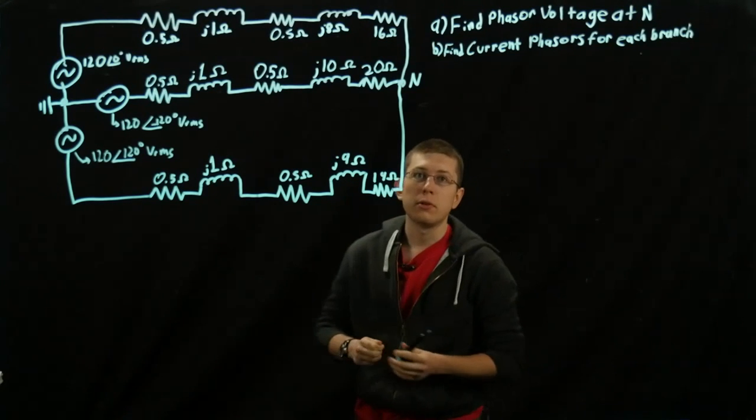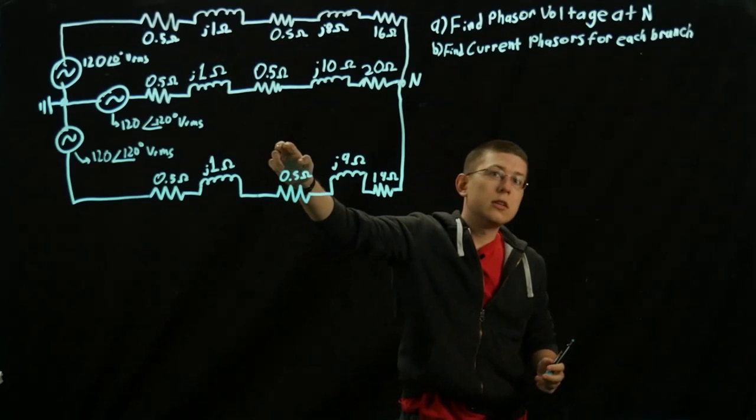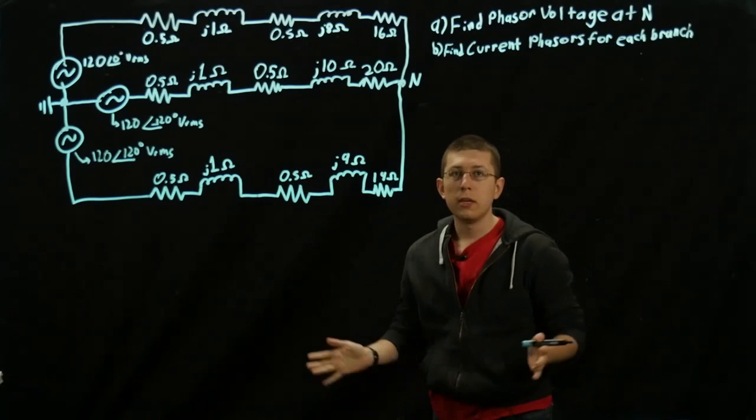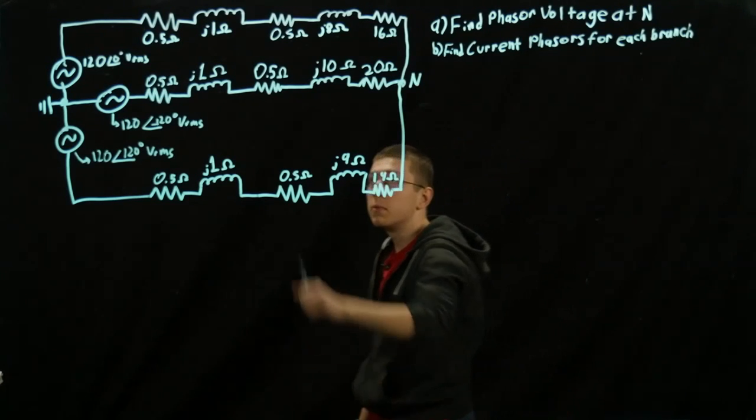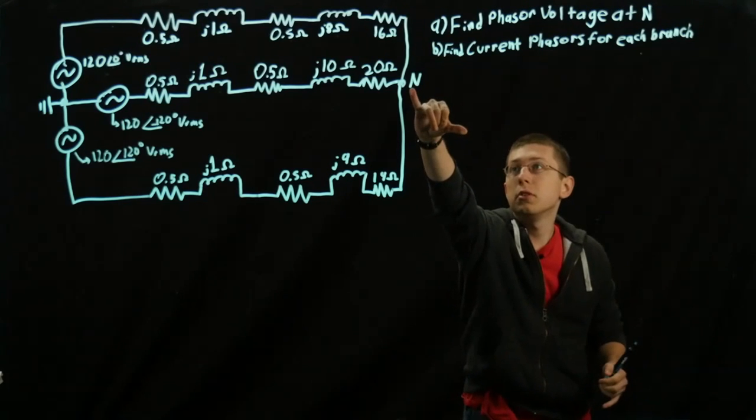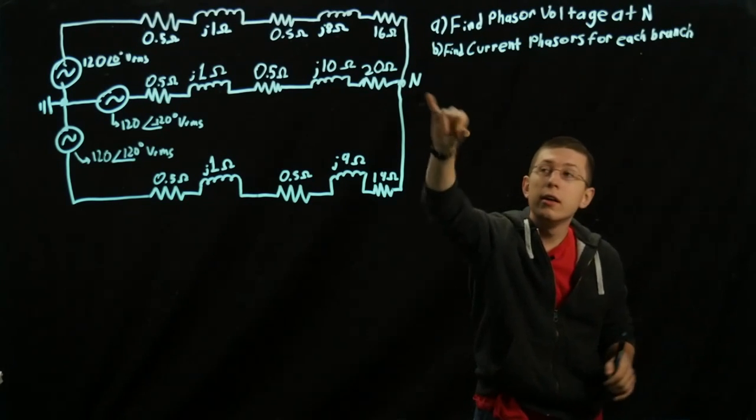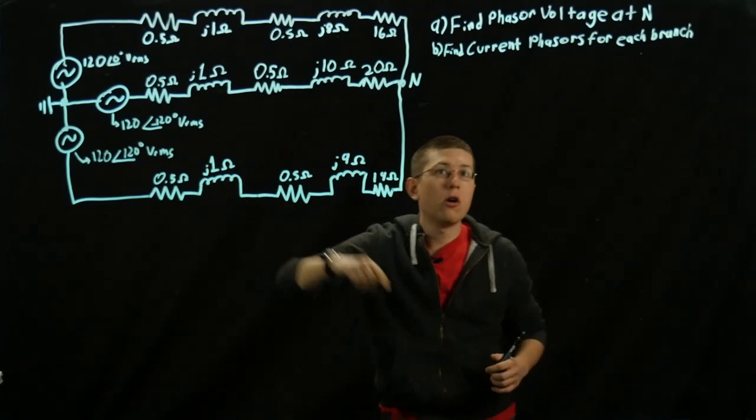So normally in an ideal three-phase system, all of these loads would be equal. Unfortunately in this problem, they're not, as you can see. Our whole purpose here is to find the phasor voltage at this node and then using that to find the currents down all three branches.